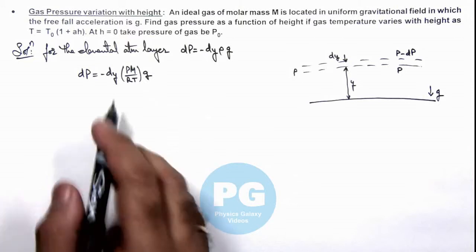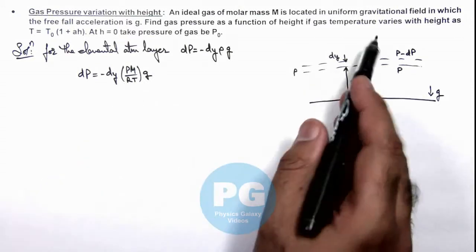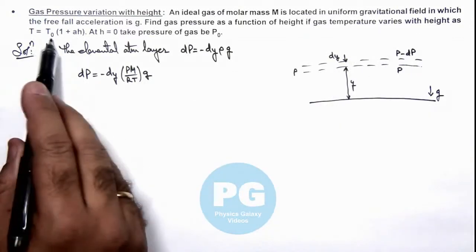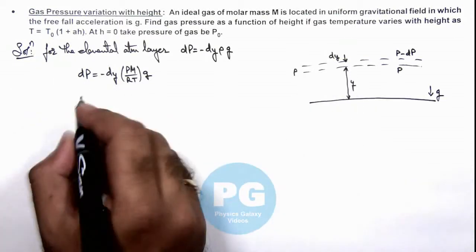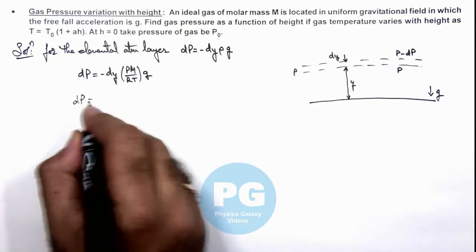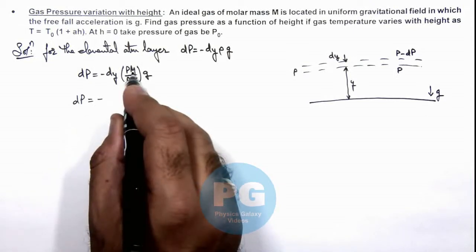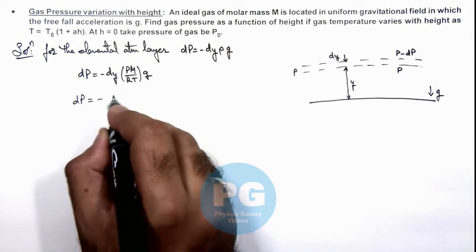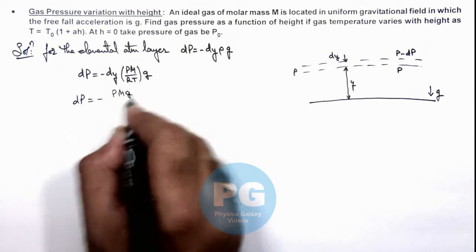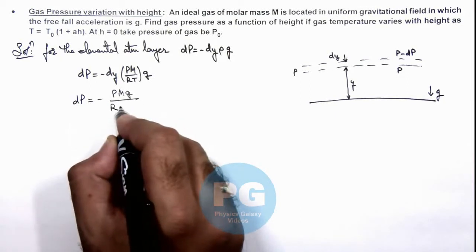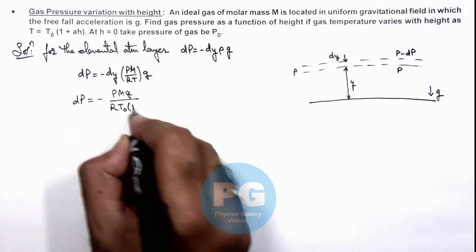And the gas temperature varies with height according to this relation, so at a height y we can substitute as dP is equal to minus of, this can be written as P Mg/(R T₀(1 + αy)).